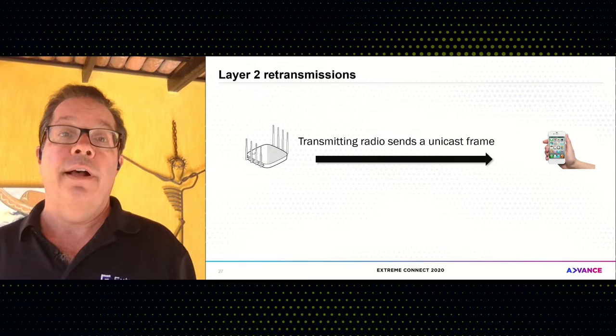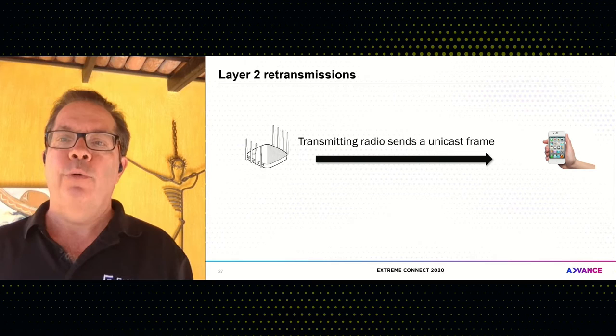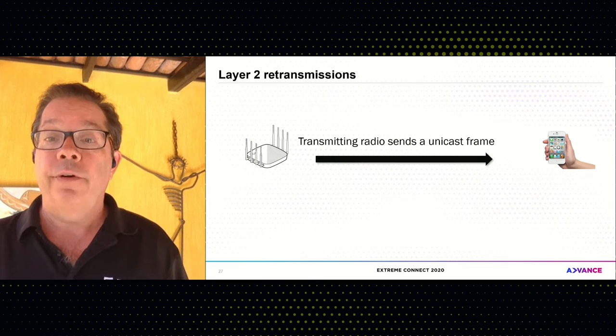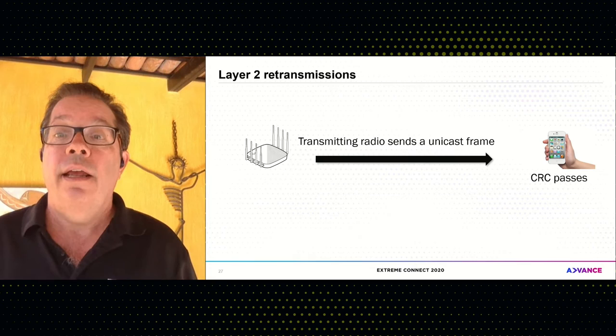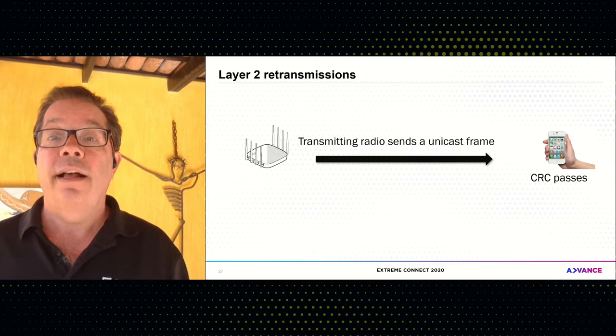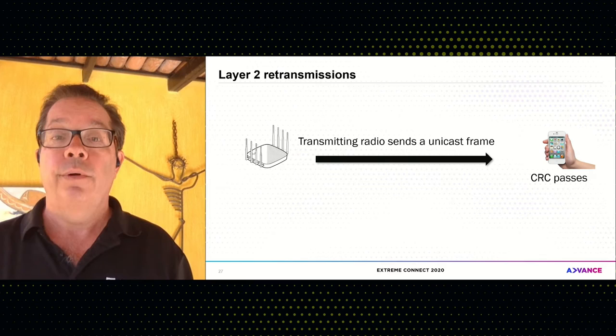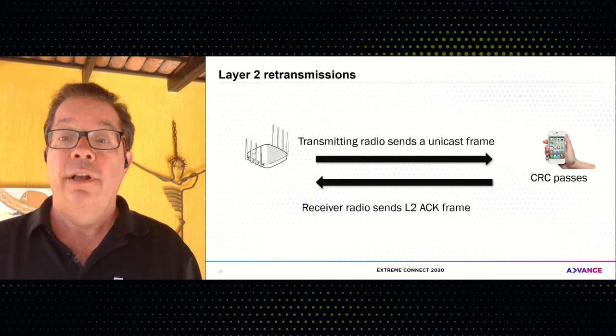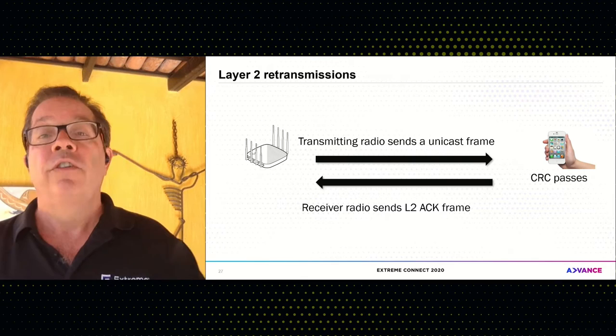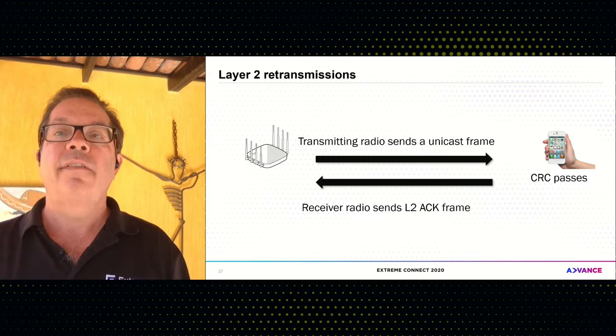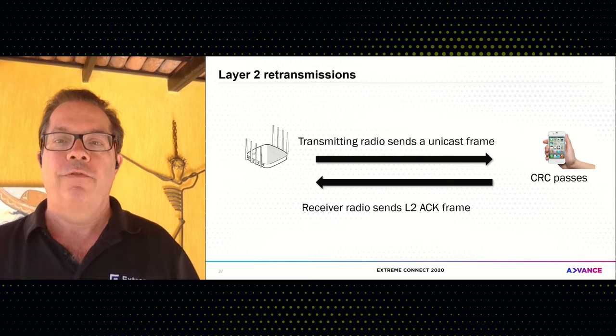Layer two transmissions — Wi-Fi 101: whenever an AP sends a unicast frame to a client device, or the other way around, that unicast frame is sent and then there is a CRC check — a data integrity check for the unicast frame. If it passes, the receiver sends a layer two acknowledgement frame. All unicast traffic is acknowledged; broadcast and multicast traffic is not. Think of this as a delivery verification method for Wi-Fi.